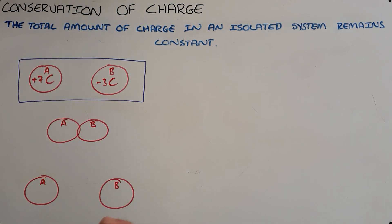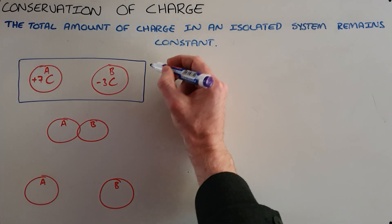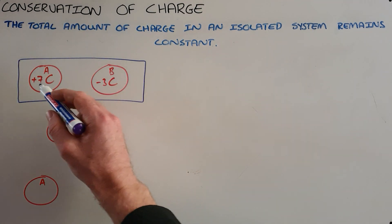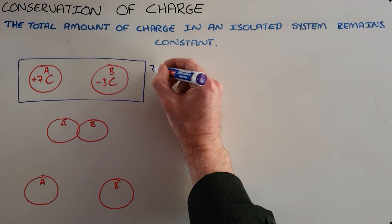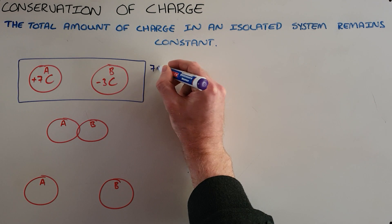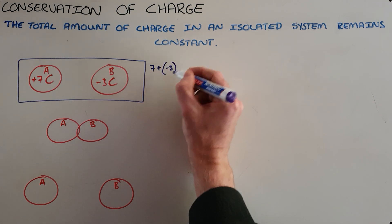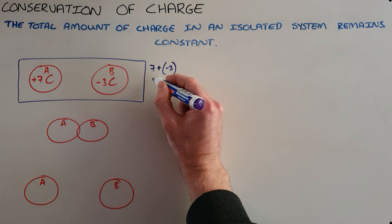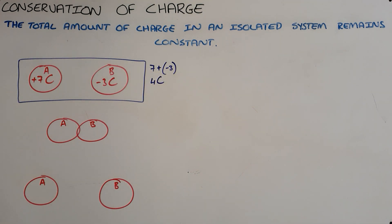What we can see here is that the total amount of charge is equal to 7 coulombs plus the negative 3 coulombs. The total amount of charge in this system is 4 coulombs.